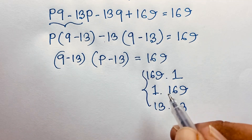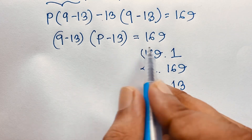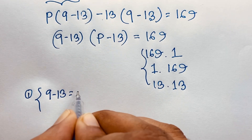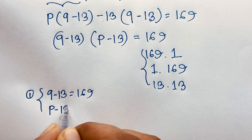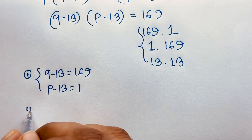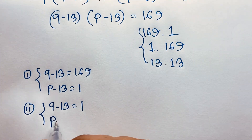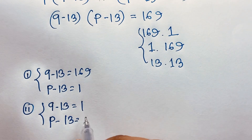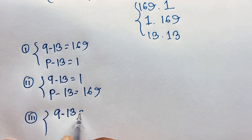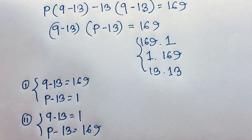Since P and Q are positive integers, we set up our cases. Case 1: Q minus 13 equals 169 and P minus 13 equals 1. Case 2: Q minus 13 equals 1 and P minus 13 equals 169. Case 3: Q minus 13 equals 13 and P minus 13 equals 13.